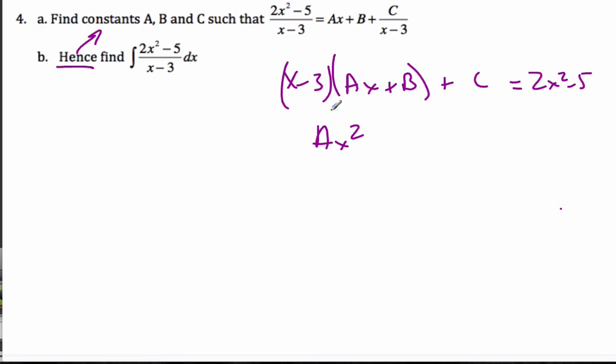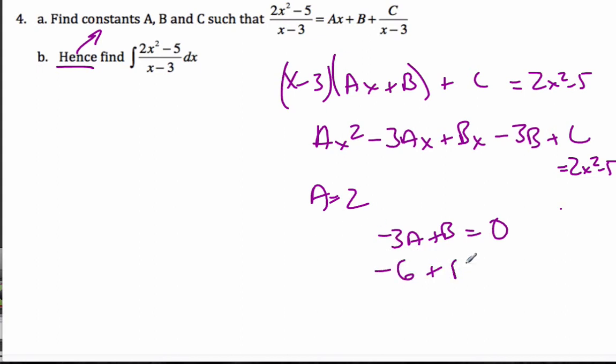And then I'm going to get a minus 3Ax and a plus Bx. And then finally, I'm going to get a minus 3B plus C is equal to 2x squared minus 5. Well, I know that A equals 2. That's an easy one. And so now when I look at this part here, minus 3A plus B has to be the x term here, which is 0. But I know A is 2, so it's minus 6 plus B is 0. So B is equal to 6.